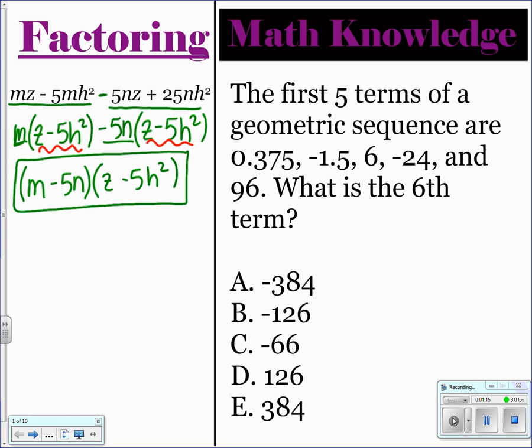For the math knowledge question, this is a geometric sequence — this times some number gives you that, times some number gives you that, and so on up to 96. The number you're going to multiply by is negative 4. So 0.375 times negative 4 is negative 1.5, times negative 4 is 6, times negative 4 is negative 24, times negative 4 is 96. So negative 4 times 96 gives you negative 384, and that would be the sixth term.